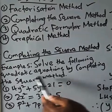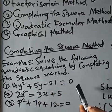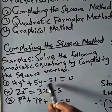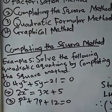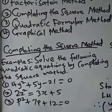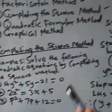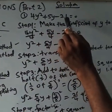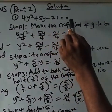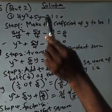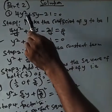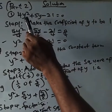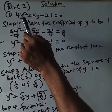Example: solve the following quadratic equations by completing the square method. We have three questions here; we'll take them one after the other. We have 4y squared plus 5y minus 21 equals zero. Step one: make the coefficient of y squared to be one.